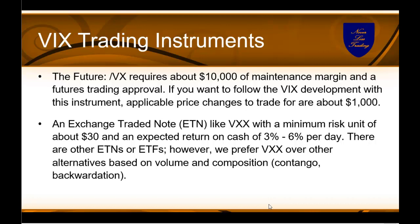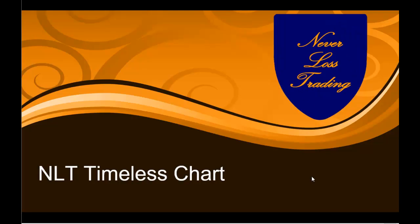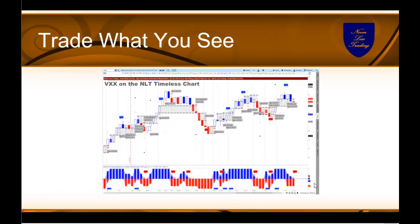We prefer the VXX over other alternatives based on volume and composition. Issues like contango and backwardation do not need to be considered because the maximum holding time will be two days. Most trades — about 80% — will be opened and closed the same day. To help you dissect big daily price moves into manageable risk units, we use the Never Lost Trading timeless chart. It is a concept that is purely price-based, since price results from a shift in supply and demand, and our algorithm measures and sizes the price unit you're going to trade.